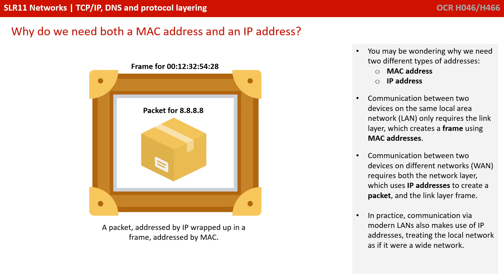Having worked our way down the stack, you may be wondering why we need two different types of addresses — MAC addresses and IP addresses. Communication between two devices on the same LAN only requires the link layer, which creates a frame using MAC addresses. Communication between two devices on different networks requires both the network layer, which uses IP addresses, and the link layer frame. In practice, modern LANs also make use of IP addresses, treating the local network as if it were a wide area one.